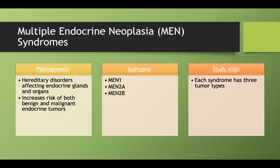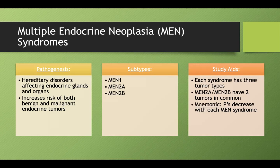Each of these syndromes — MEN1, 2A, or 2B — has three main tumors you have to remember. MEN2A and 2B have two tumors in common, so you really only have to memorize one other tumor for each. A helpful mnemonic: most of these tumors start with the letter P, and the number of P's decreases with each MEN syndrome. MEN1 has all three tumors starting with P, MEN2A has two, and MEN2B has only one.